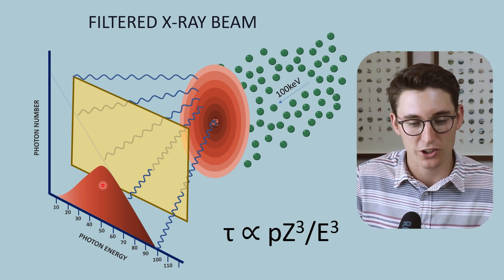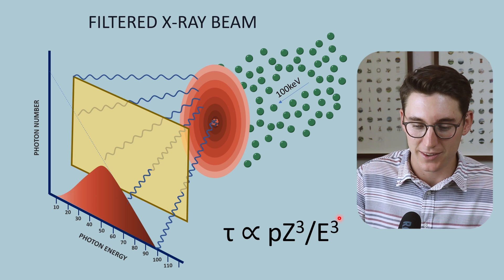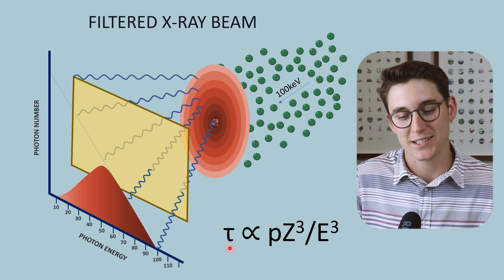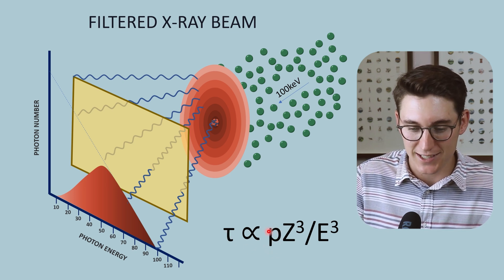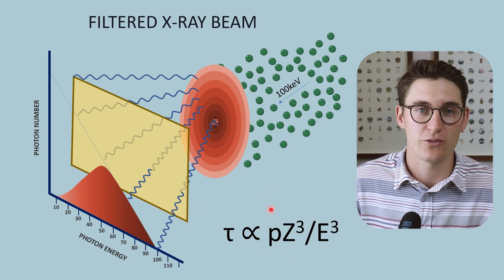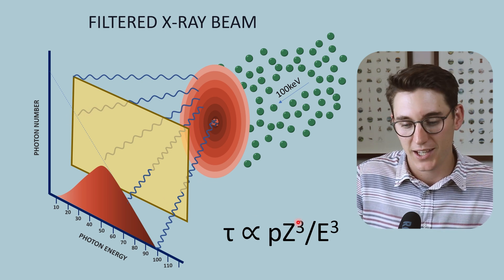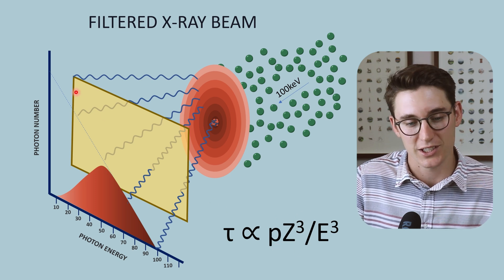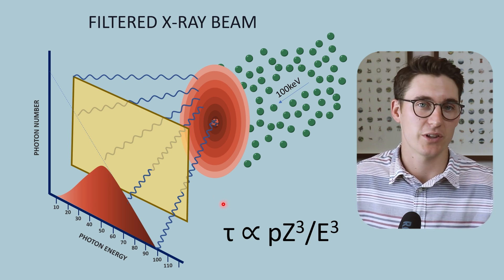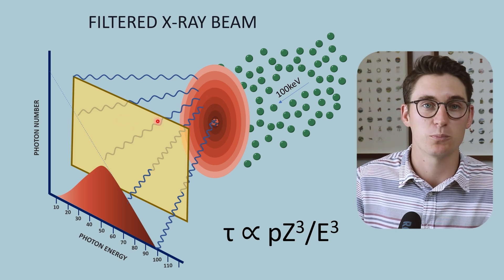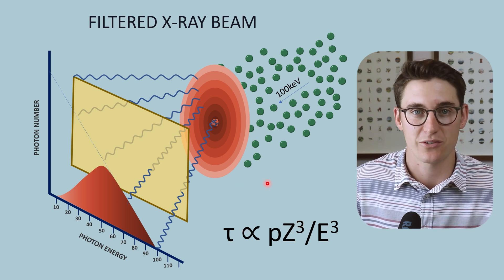Filtration occurs by an effect called the photoelectric effect. The photoelectric effect is defined by this function, where tau (τ) represents the likelihood of the photoelectric effect to occur. If we increase the density of our filter, we increase the likelihood of the photoelectric effect and the likelihood of x-rays being attenuated. If we increase the atomic number of our filter — we often use aluminium with atomic number 13, but tungsten has atomic number 74 — we get much more attenuation, because atomic number is exponentially proportional to the likelihood of the photoelectric effect.